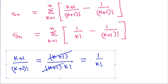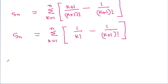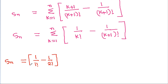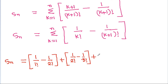Sn equals the telescoping sum. Putting k equals 1: 1/1! minus 1/2!. Putting k equals 2: 1/2! minus 1/3!. Putting k equals 3: 1/3! minus 1/4!, and so on.